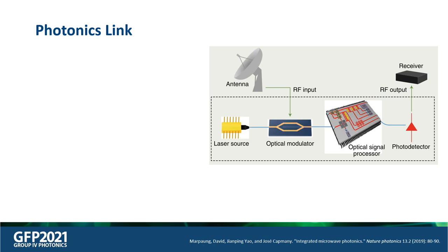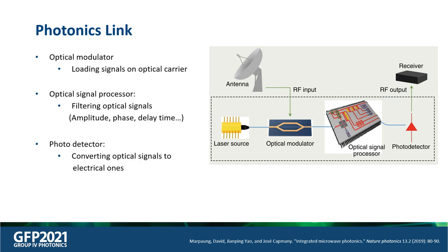A photonics link consists of a laser source, optical modulator, optical signal processor, and photodetectors. The optical modulator is used to load signals from the outside onto the optical carrier, and the optical signal processor is used to filter the optical signals — for example, from the amplitude, the phase, or added delay times. The photodetector converts the optical signals to the electrical ones.